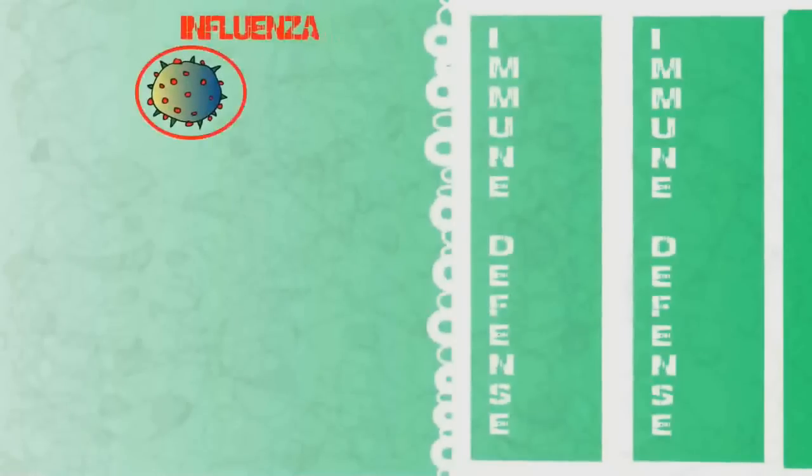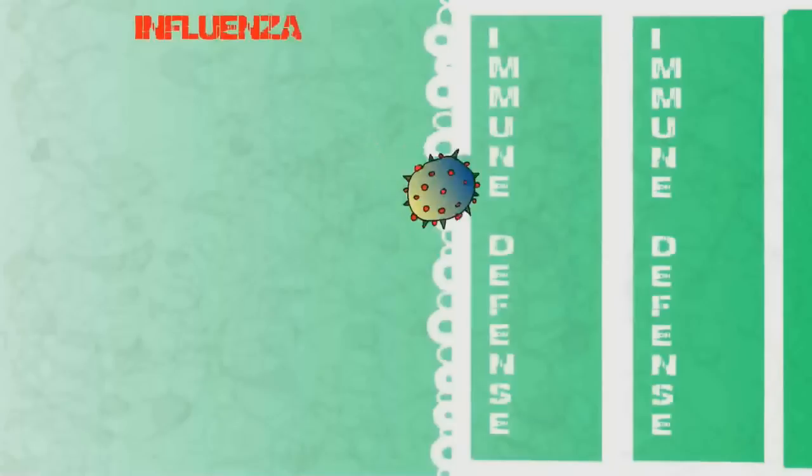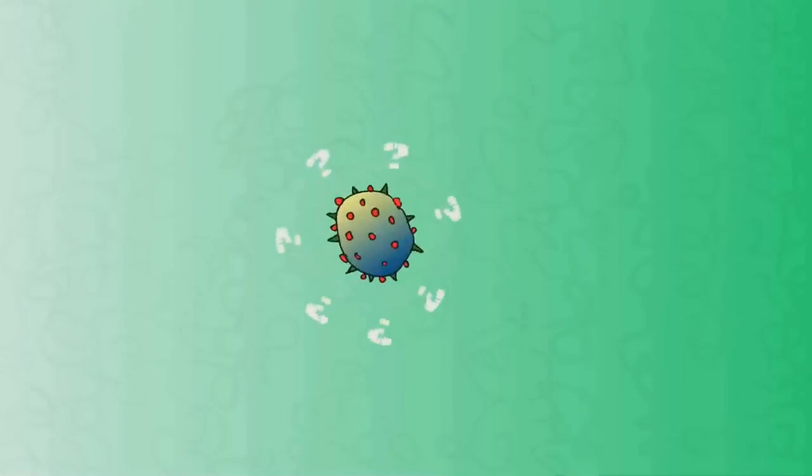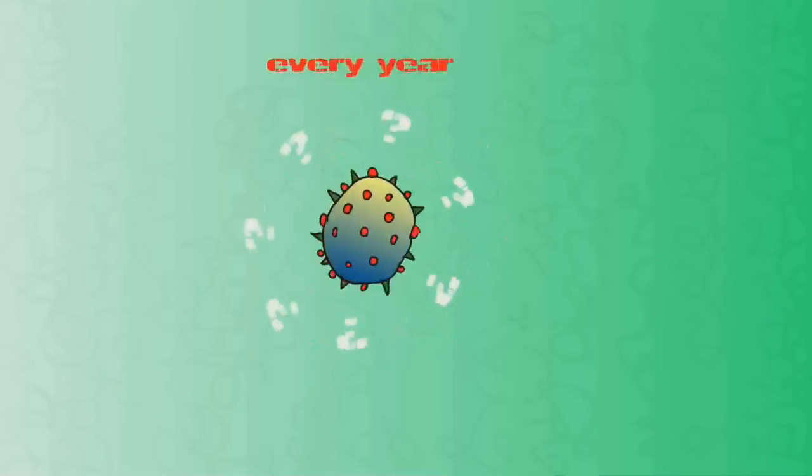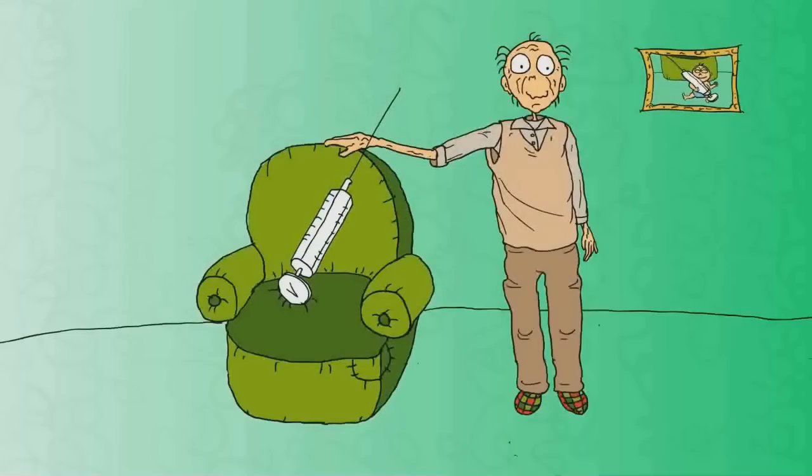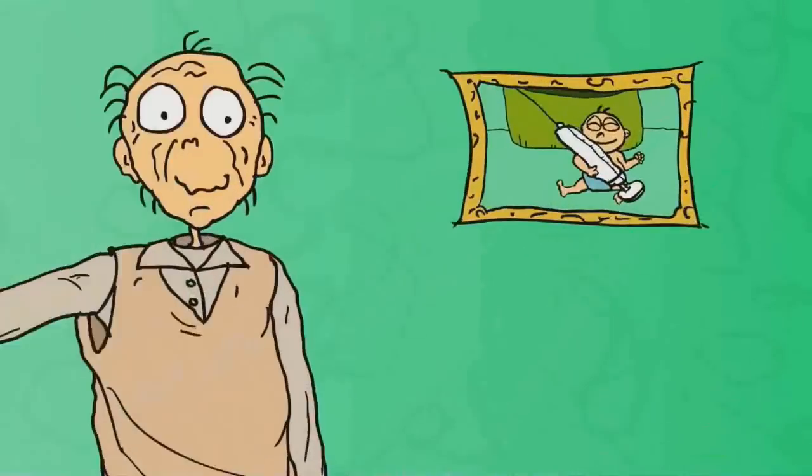Influenza is one of the only viruses that is able to beat the initial defenses of our immune system quite frequently. But why is this virus so good at it, and why do we need to get a vaccine every year? Especially when most vaccines work for decades, or even a lifetime.